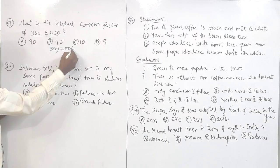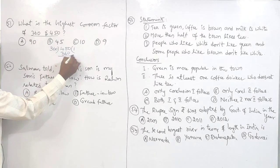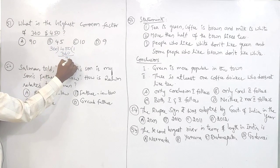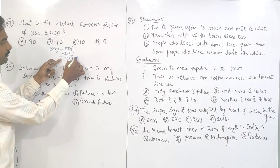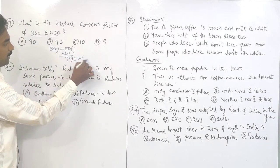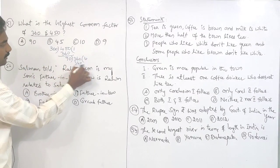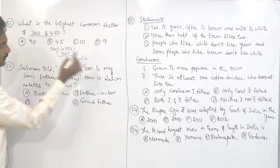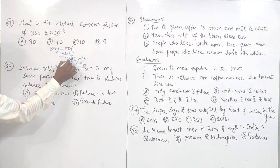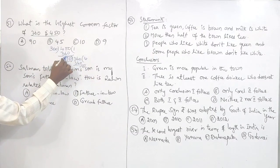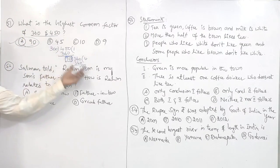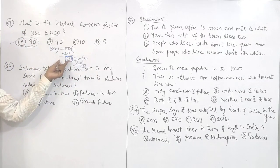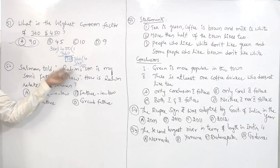360 ones are 360, and the remainder is 90. Now take down 360 here. 90 fours are 360, so the remainder is 0. The answer — HCF, highest common factor — is 90. This is the way to solve and find the highest common factor.